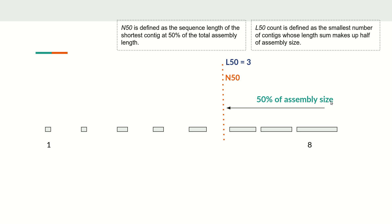So if the assembly size is 1000 kilobase pairs, 50 percent is 500 kilobase pairs. With that cutoff, if three contigs from longest to shorter reach that value, then L50 equals 3 — meaning three contigs together form 50 percent of the assembly. The N50 value is the length of the shortest of those three contigs.